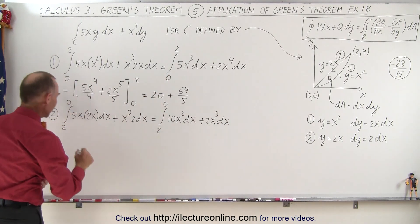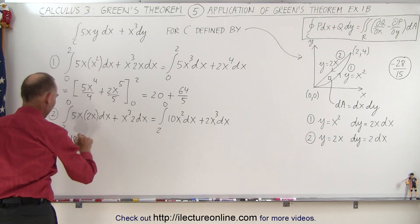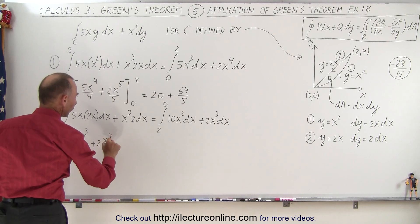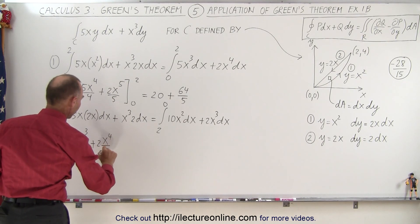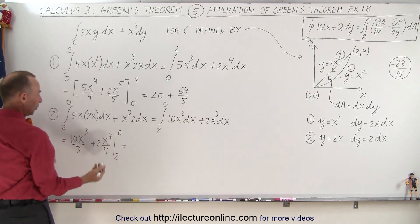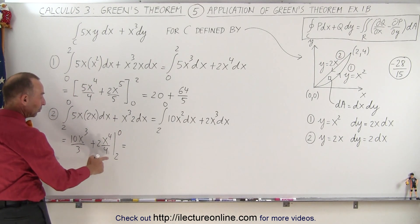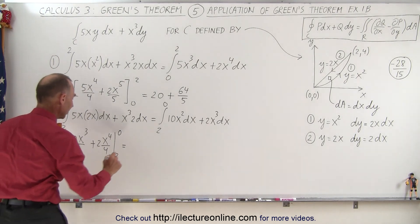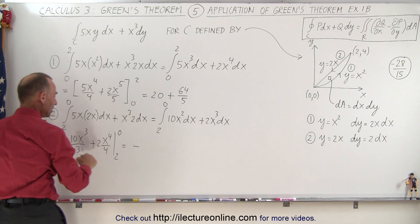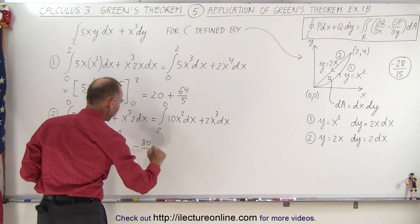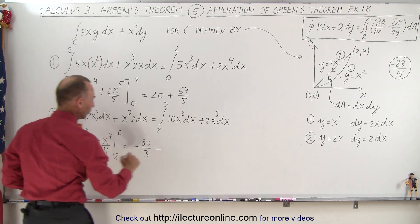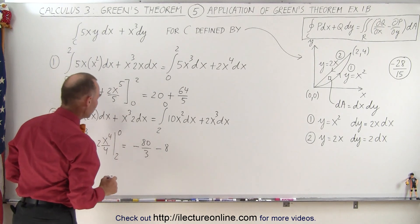Now let's go ahead and integrate that. This becomes equal to 10x cubed over 3 plus 2x to the 4th over 4, evaluating it from 2 to 0. When we plug in the upper limit, we get nothing. We plug in the lower limit, remember that's the lower limit, so we have to put negative signs on there. This becomes equal to negative 80 over 3 and negative 8.